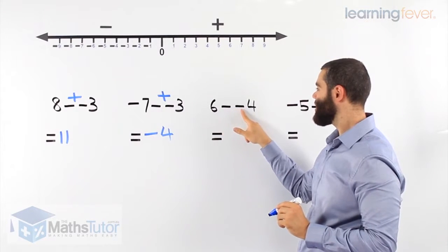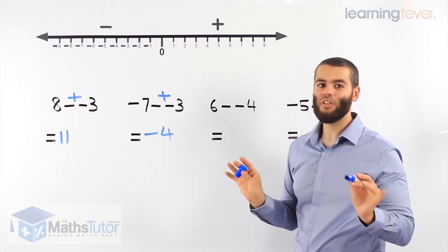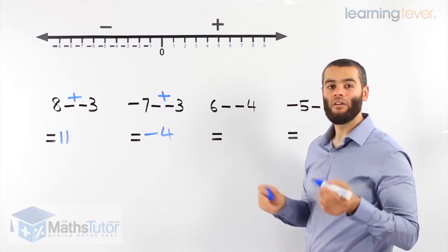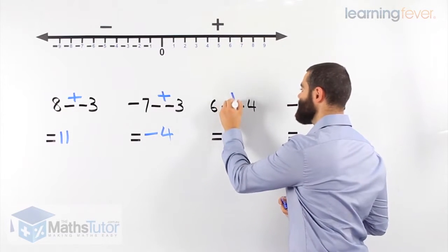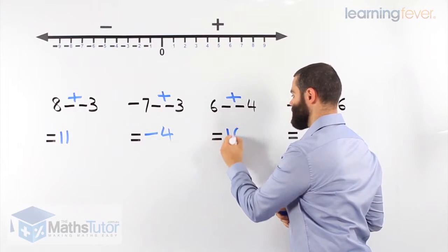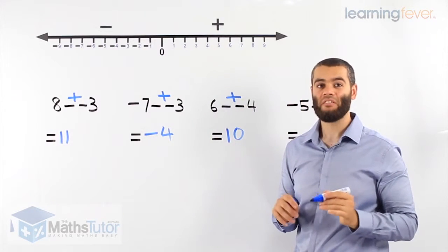6 minus negative 4. Come on, you can do this one. What do we do? Two negatives side by side. What do they become? A plus. 6 plus 4, our answer is 10.